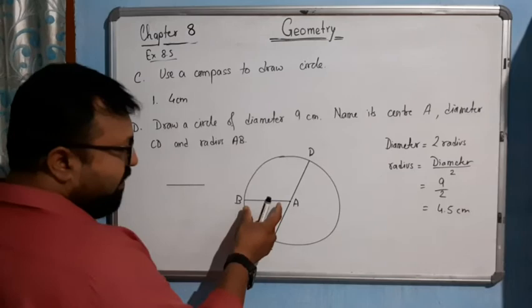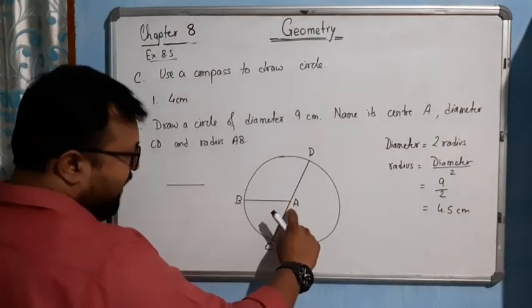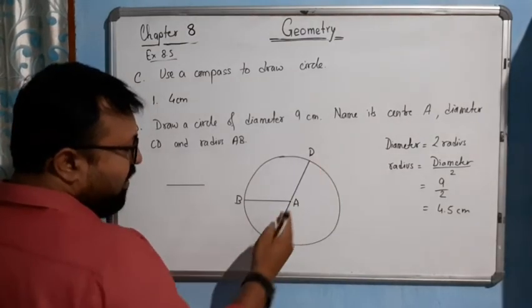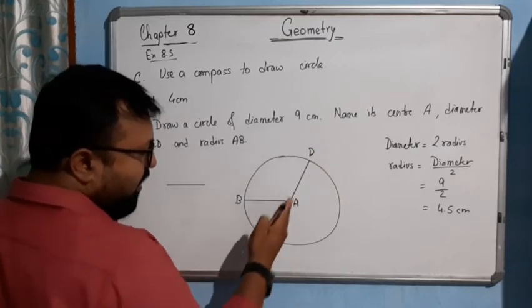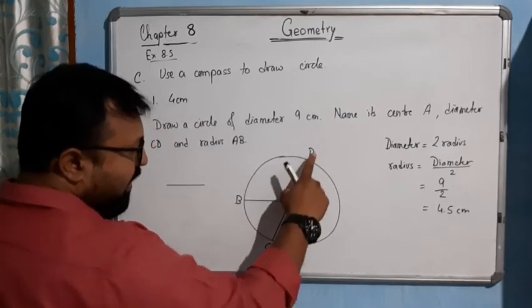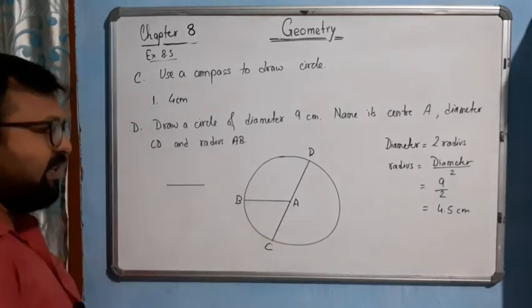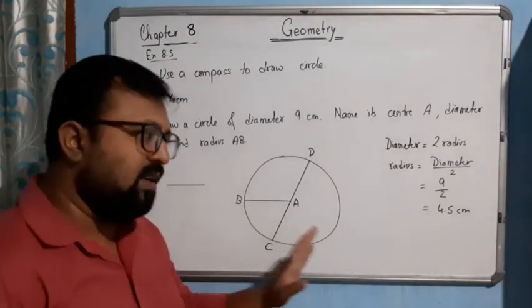So AB is our radius, AC also radius, AD also radius. And as it is a straight line, CAD or you can say CD is our diameter. And it is the longest chord of the circle also.